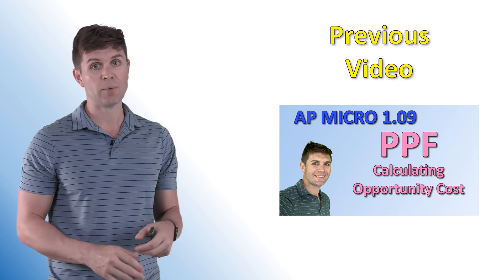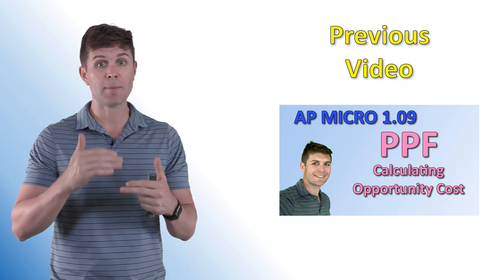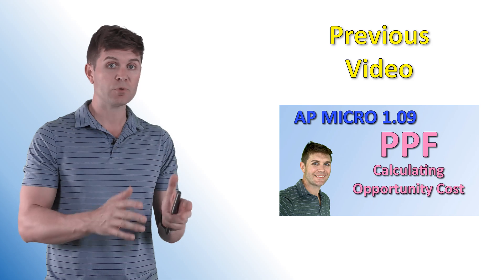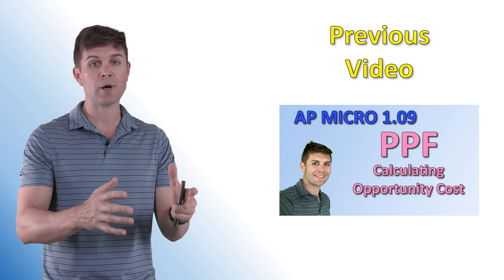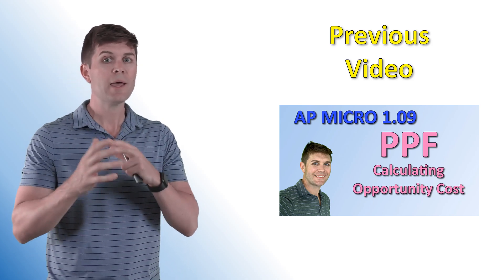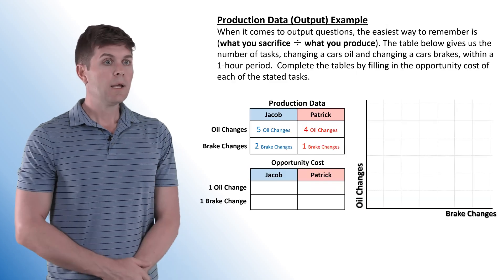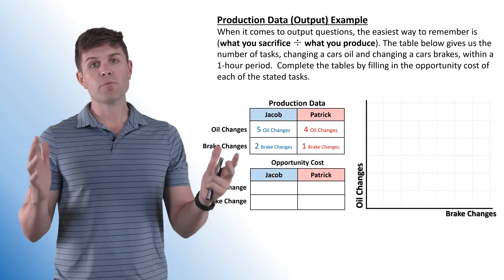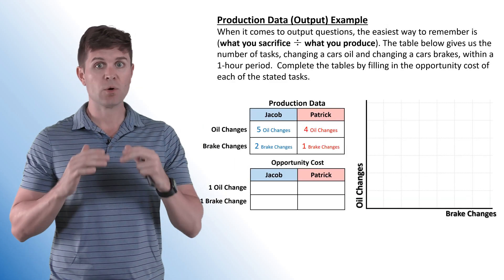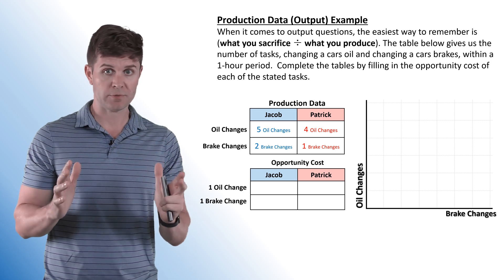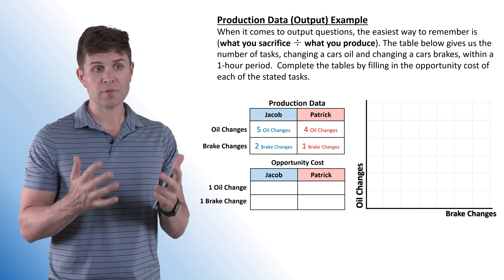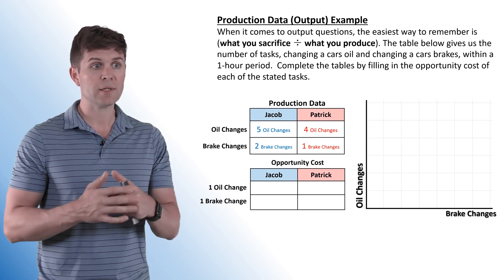I would suggest checking that one out. We go over the step-by-step process in calculating opportunity cost, whether it's an input problem or an output problem, and explain what those actually are. The first section we're looking at is production data, or output examples. When it comes to output questions, the easiest way to remember is: